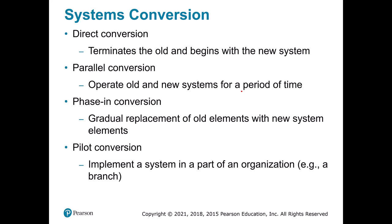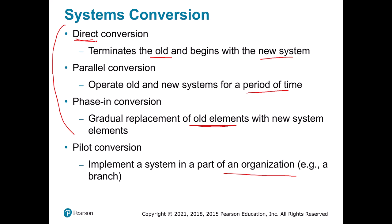To recap conversion: we have direct conversion where we replace the old system with the new one, parallel operation where both run side by side for a period of time, phased where we gradually replace old with new, and pilot where we try one part of the organization first. The big three to remember are direct, parallel, and phase-in. The term big bang is also commonly used for direct conversion — because things usually go well, but sometimes they blow up.